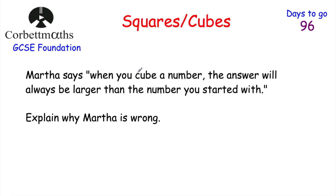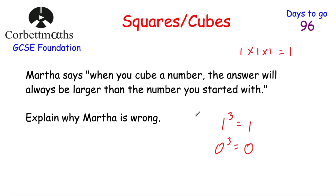The last question: Martha says that when you cube a number the answer will always be larger than the number you start with. Explain where Martha is wrong. Consider 1 cubed: 1×1×1 = 1, which is not bigger — it's the same. 0 cubed is also 0, again the same. And if you cube a decimal such as 0.5: 0.5×0.5×0.5 = 0.125, which is actually smaller. So Martha is wrong because cubing 1 or 0 gives the same value, and cubing a decimal less than 1 gives a smaller result.